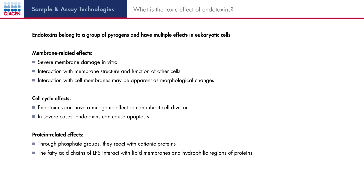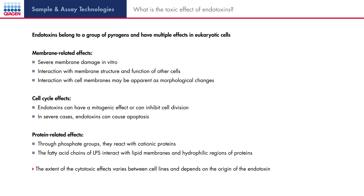Endotoxins are important because their effects are very complex and can vary significantly between different cells. One very obvious effect is membrane damage. Due to the fact that LPS is a membrane component, it can interact with the structure of other membranes, influencing membrane function and leading to morphological changes. The phosphate groups of the inner core can interact with cationic proteins of the transfected cell, and the fatty acid chain can interact with lipid membranes and hydrophilic regions of proteins. Endotoxins can cause mitogenic effects by activating cell division of B cells, as well as inhibitory effects on cell division depending on the origin of the endotoxin and on the concentration.